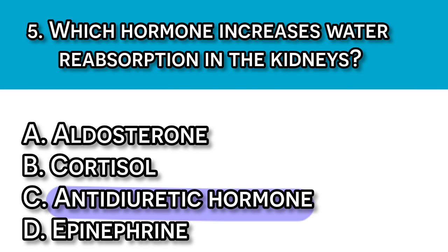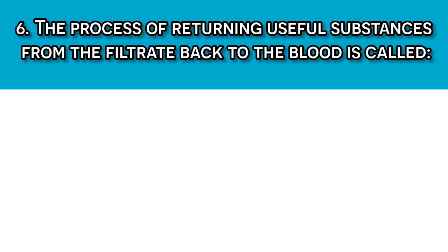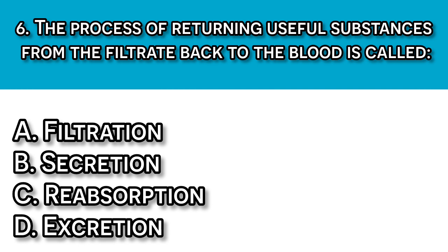Question number six: The process of returning useful substances from the filtrate back to the blood is called? A. Filtration, B. Secretion, C. Reabsorption, D. Excretion. Our answer here should be C, reabsorption, because reabsorption moves water, glucose, and ions from the nephron back into the bloodstream.